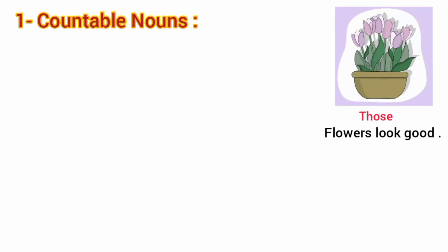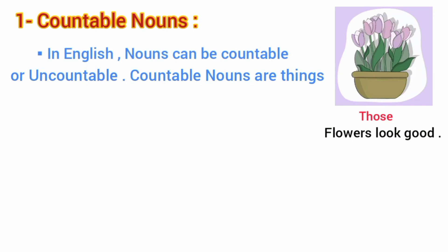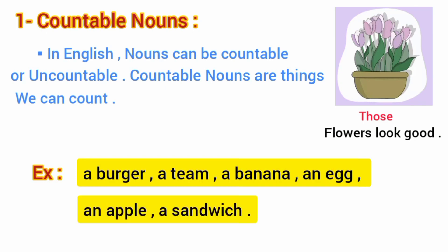Look at this example: those flowers look good. In English, nouns can be countable or uncountable. Countable nouns are things we can count. For example: a burger, a team, a banana, an egg, an apple, a sandwich.